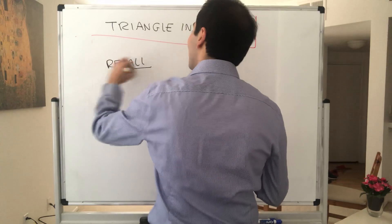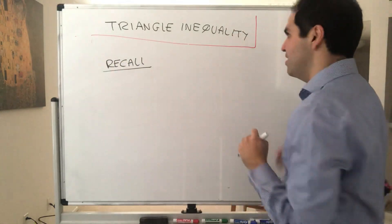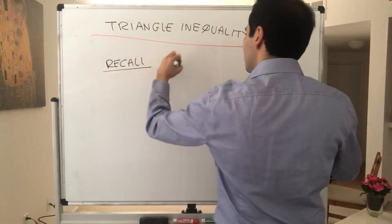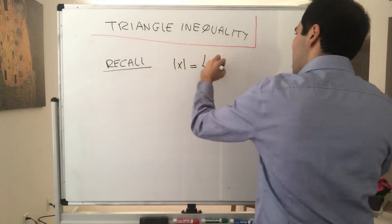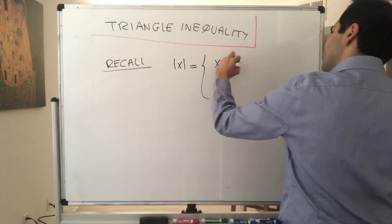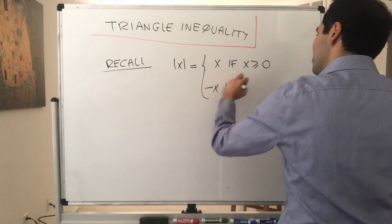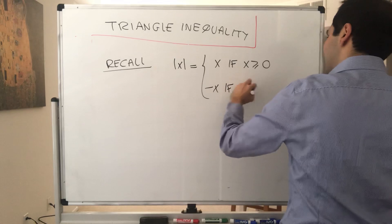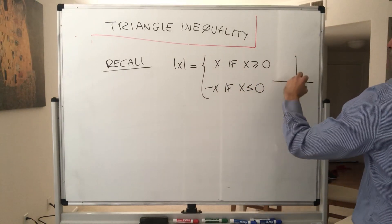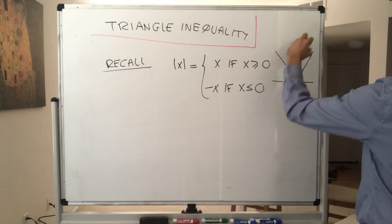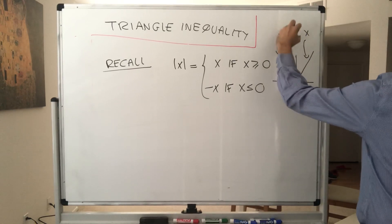Here I'll do everything in one dimension. So what is the absolute value of x? Well, that's x if x is positive, and minus x if x is negative. If you want a graph, the absolute value looks like that — it is x here and it is minus x here.